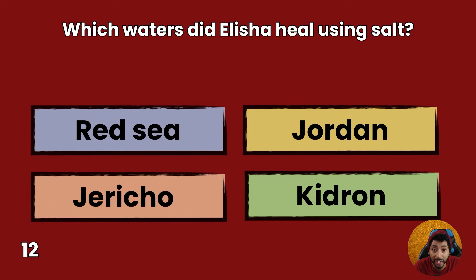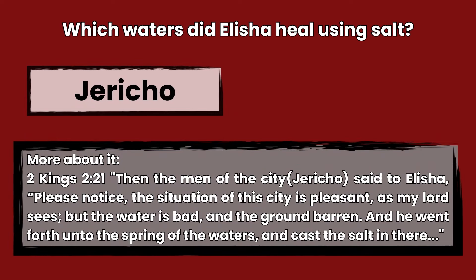Question 12: Which waters did Elisha heal using salt? Red Sea, Jordan, Jericho, or Kidron? Answer: Jericho. 2 Kings 2:21 — Then the men of the city of Jericho said to Elisha, Please notice the situation of this city is pleasant, as my Lord sees, but the water is bad, and the ground barren. And he went forth into the spring of the waters, and cast the salt in there.